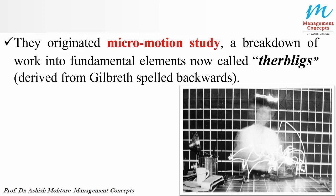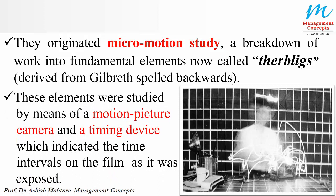These elements were studied by means of a motion picture camera and a timing device, which indicated the time intervals on the film as it was exposed. As you can see in this picture, the white lines visible are from a slow-motion camera — they indicate the motions the worker made while working.